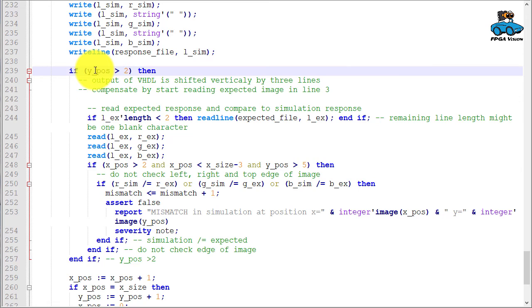Here we handle the vertical delay of the filter. So we start in line three. And here we handle the image borders. So if X position or Y position is at a border, we do not perform a check.